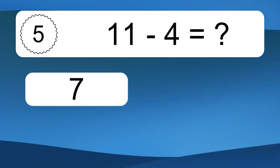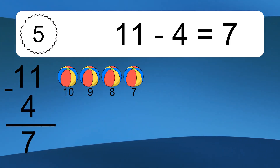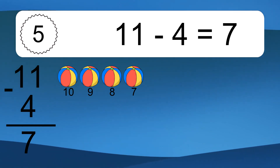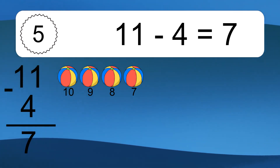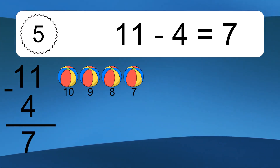11 minus 4 equals what? 11 minus 4 equals 7. Let's count it. 10, 9, 8, 7.